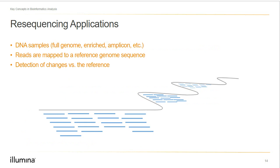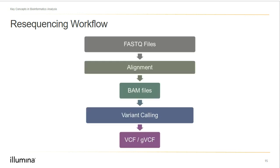Now that we understand what's in our FASTQ file, let's talk about resequencing applications. Resequencing refers to alignment or mapping reads to a reference genome, after which we perform variant calling — detecting where the samples differ from the reference. Resequencing typically refers to whole genome or whole exome sequencing. Targeted resequencing, like in amplicon or enrichment workflows, refers to performing alignment and variant calling on specified regions of the genome. A typical resequencing workflow starts with FASTQ files that get aligned to a reference genome, producing BAM files upon which we do variant calling to generate VCF or GVCF files.